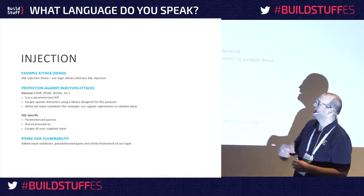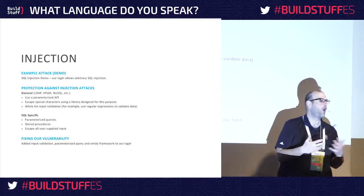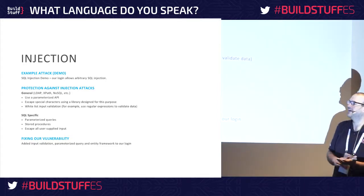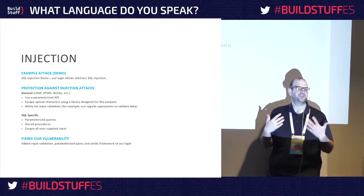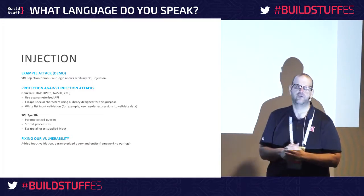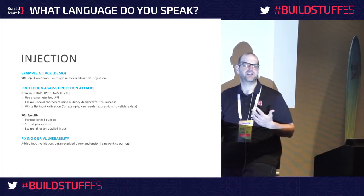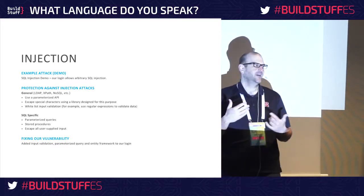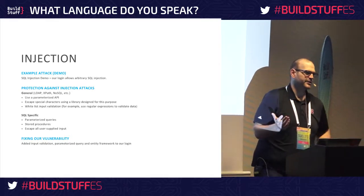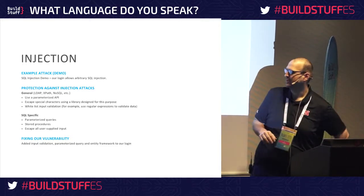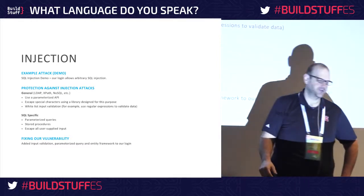The general protections from OWASP are: use parameterized APIs — almost all technologies have them. Escape using special characters, especially for LDAP and XPath, where there are libraries that will escape everything for you. You can also whitelist input — if you're just expecting a first name, it should only have alphanumeric characters. Validate and escape all user input.